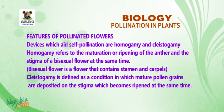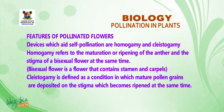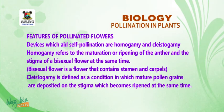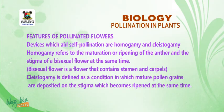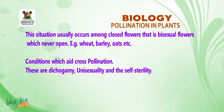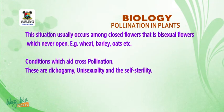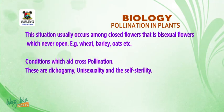A bisexual flower is a flower that contains stamens and carpels on the same flower. Cleistogamy is defined as a condition in which mature pollen grains are deposited on the stigma, which becomes ripened at the same time. This usually occurs among closed bisexual flowers which never open — e.g., wheat, barley, oats, and so on.